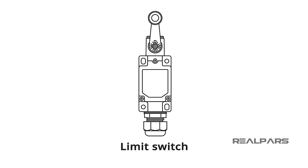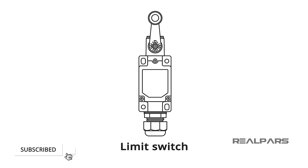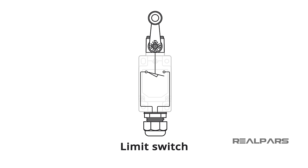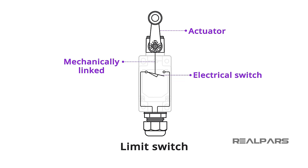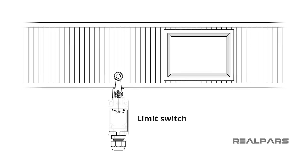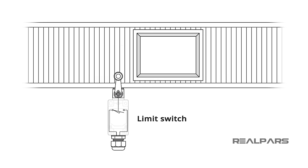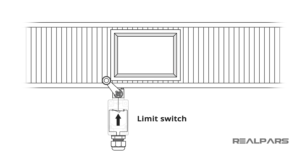Now that we've looked at a couple of limit switch applications where you might see them in action at home, let's have a closer look at the device itself. A limit switch is an electromechanical device consisting of an actuator mechanically linked to an electrical switch. When an object contacts the actuator, the switch will operate causing an electrical connection to make or break.